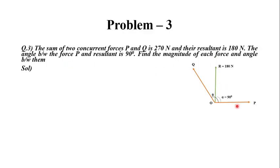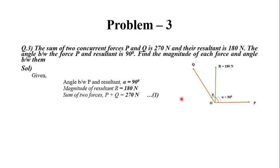The sum of the congruent forces P and Q is 270 Newton. The resultant R is 180 Newton, and the angle between the resultant and force P is 90 degrees. We have to find the magnitude of forces P and Q and the angle between these two forces.